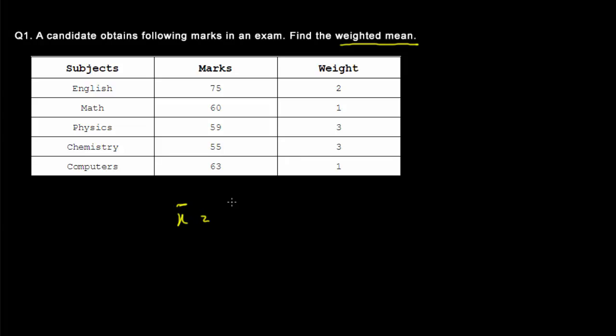X bar is equal to summation of fi times xi divided by summation of fi. Now xi is your marks column and fi stands for frequency, but in this question frequency has been replaced by weight. Therefore we are going to replace fi by wi.